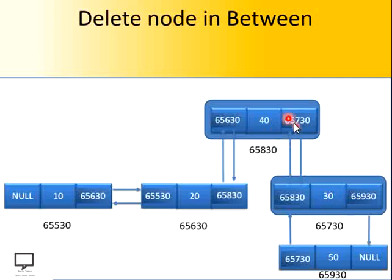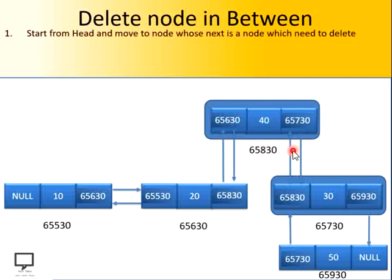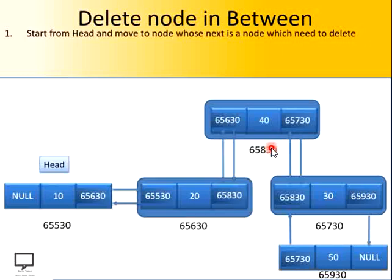Now let's see if I want to delete this node, how we can perform the delete operation. We are supposed to start from the head node and move to the node whose next node is the one we want to delete. We are going to start from the head node and stop at this position, because its next node is the one which we want to delete. We start with the head node and stop at the node whose next field holds the address of the node we want to delete.